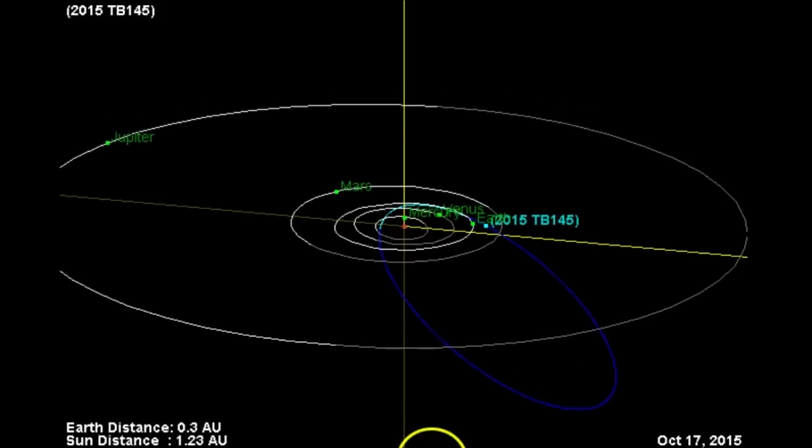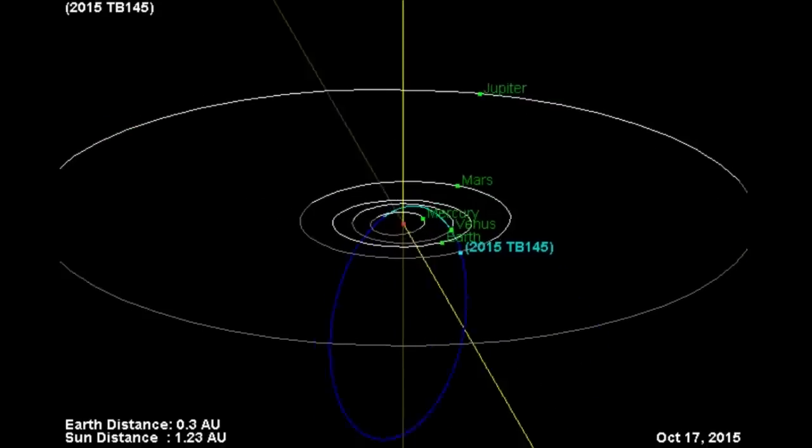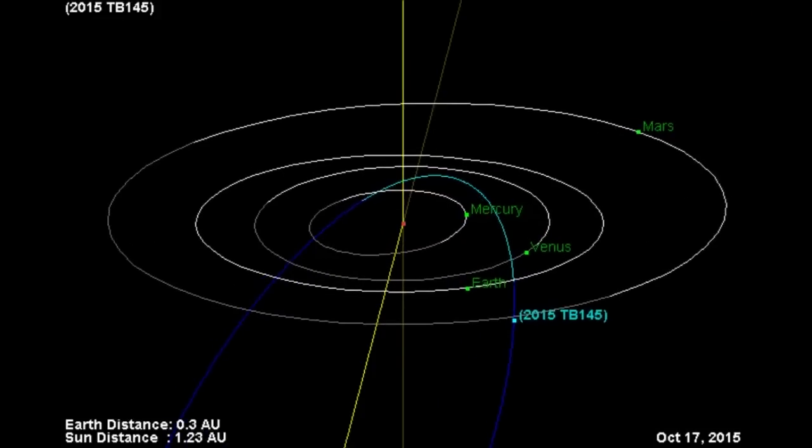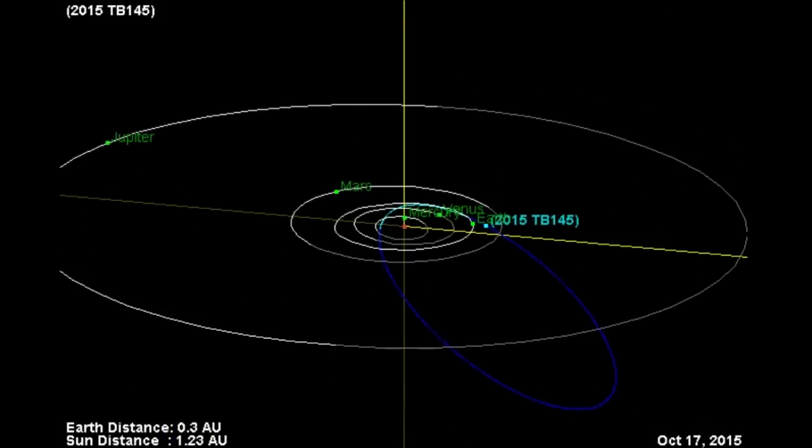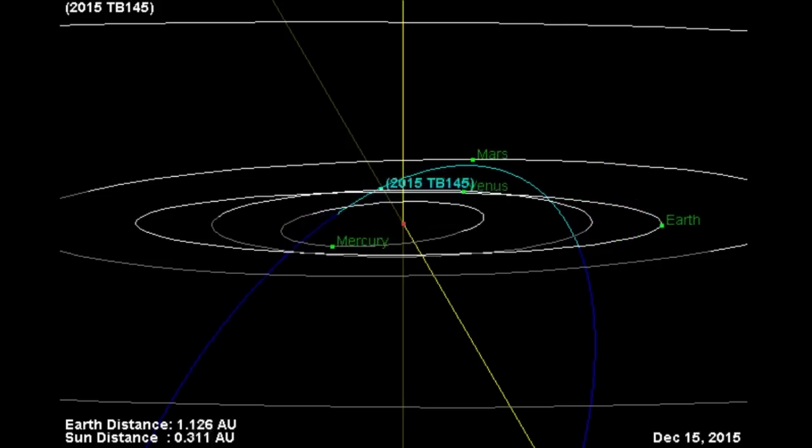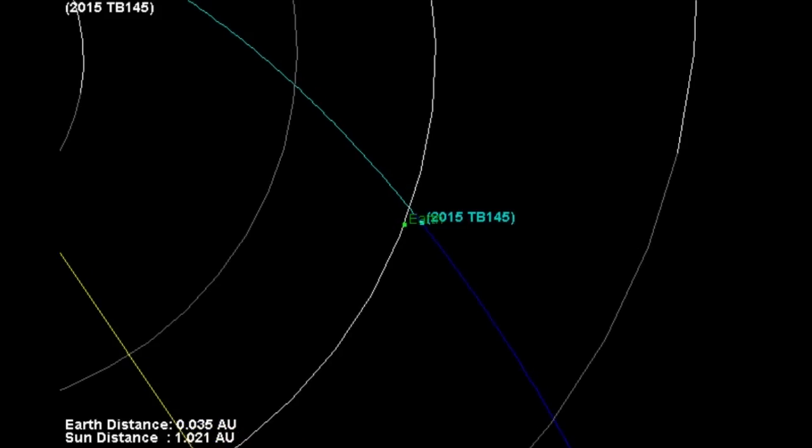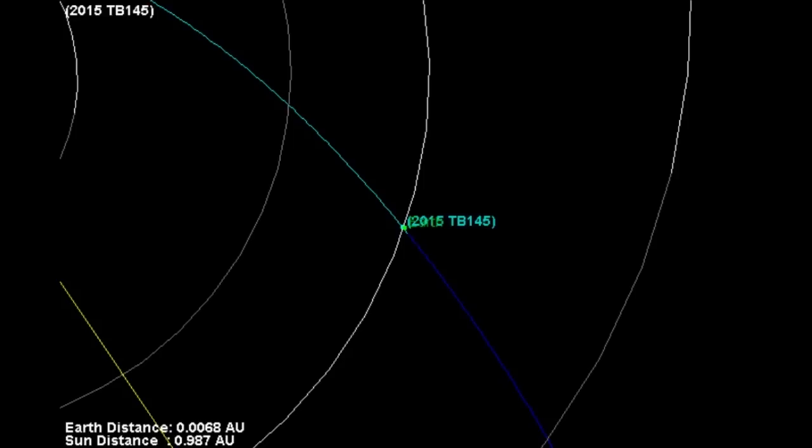All right, let's look at its orbit. Oh man, if you'll notice its orbit, look at that—it's coming from below us. Yeah, that's kind of creepy. The more I look at this one, it's pretty creepy, man.